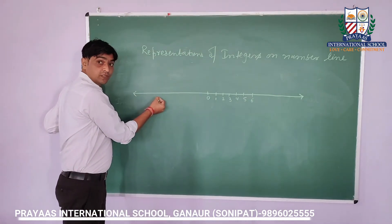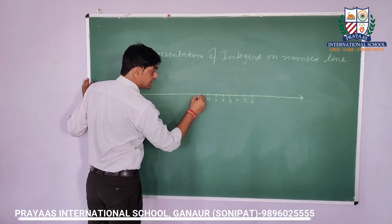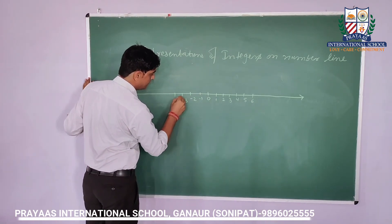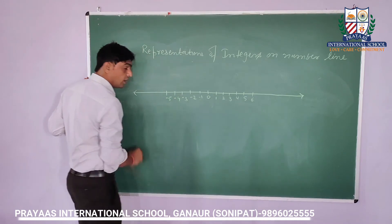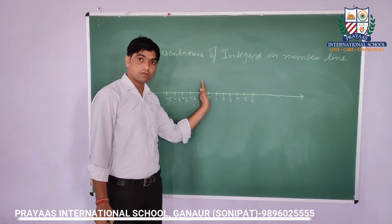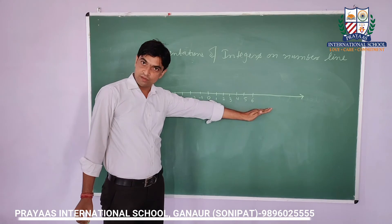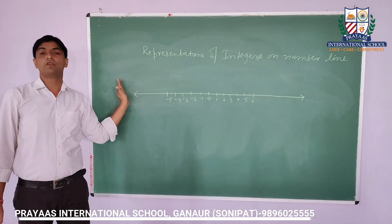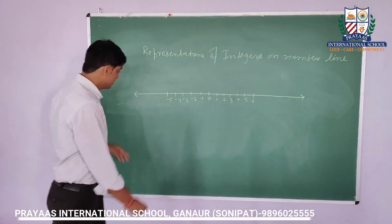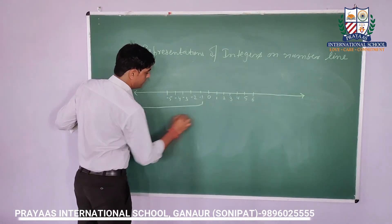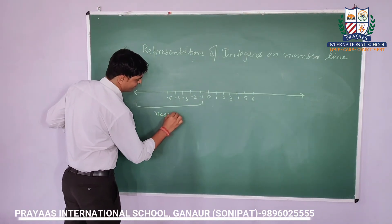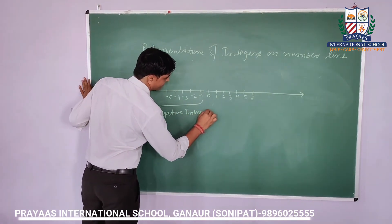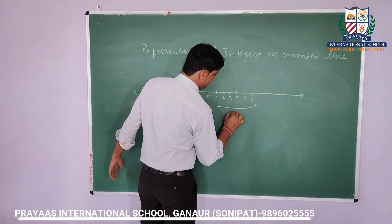On the left-hand side of zero, with the same spacing, we place minus 1, minus 2, minus 3, minus 4, and so on. Always on the right-hand side of zero we write the positive integers, and on the left-hand side we always write the negative integers. So these are our negative integers on the left, and these are our positive integers on the right.